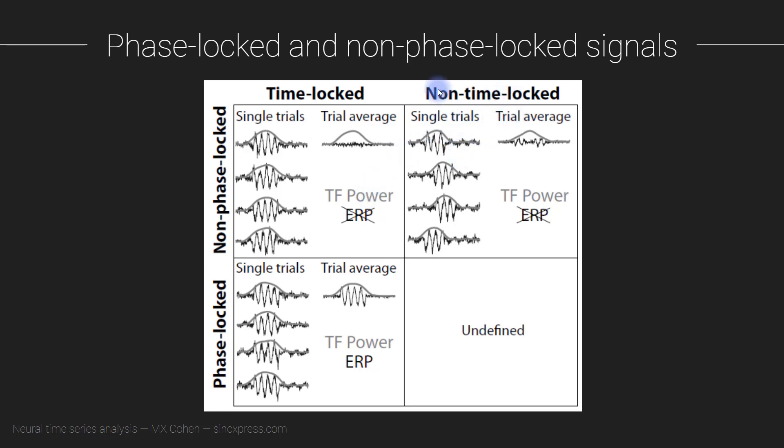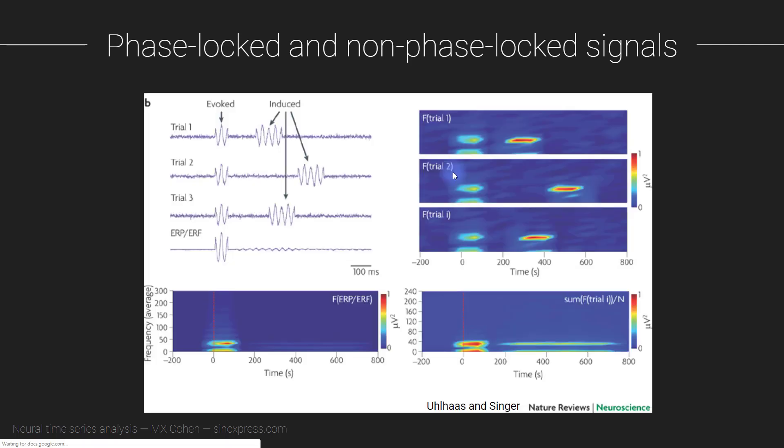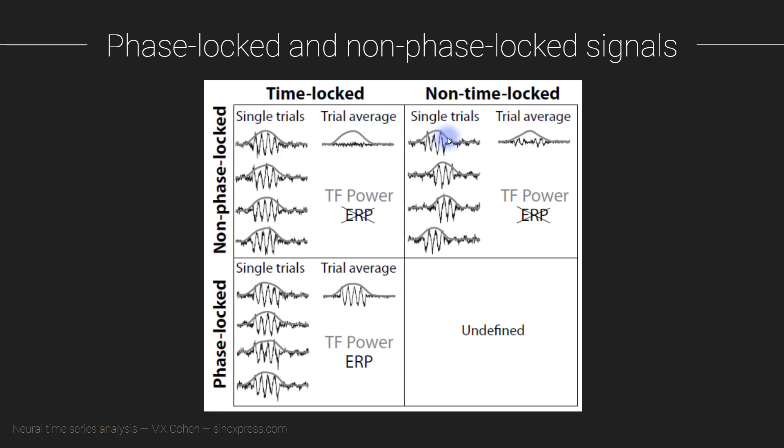And here we get to a case where you have non-time locked and also non-phase locked activity this is like what I showed here in this previous slide where the signal happens at different times on different trials. So here I'm just lagging them by a little bit so they're overlapping a little bit. So again this sort of pattern is not going to be visible in the ERP and whether it's visible in the time frequency response depends a little bit on how non-time locked they are. If they're really spread apart and you don't have that many trials then non-time locked activity will also be invisible in the time frequency power spectrum.